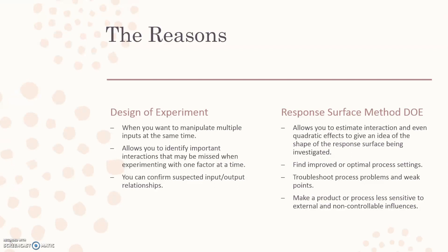What about doing a response surface method DOE? An RSM is a more specific design of experiment with a more specific objective. It allows you to estimate interaction and quadratic effects to give an idea of the shape of the response surface being investigated. You can find improved or optimal process settings, troubleshoot process problems and weak points, and make a product or process less sensitive to external and non-controllable influences.